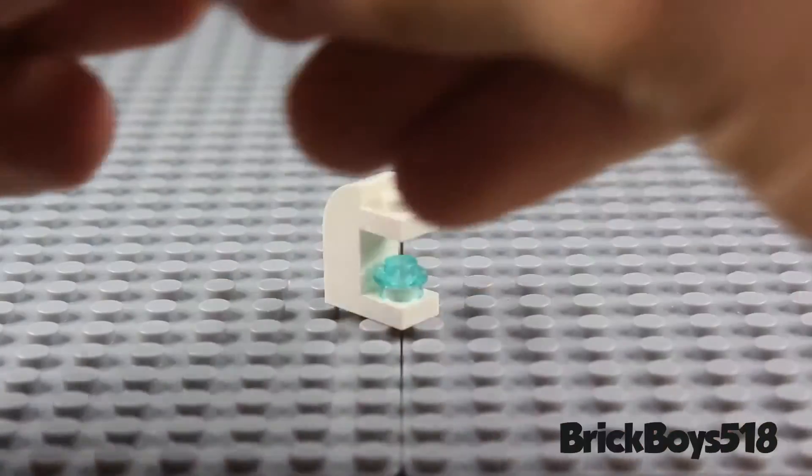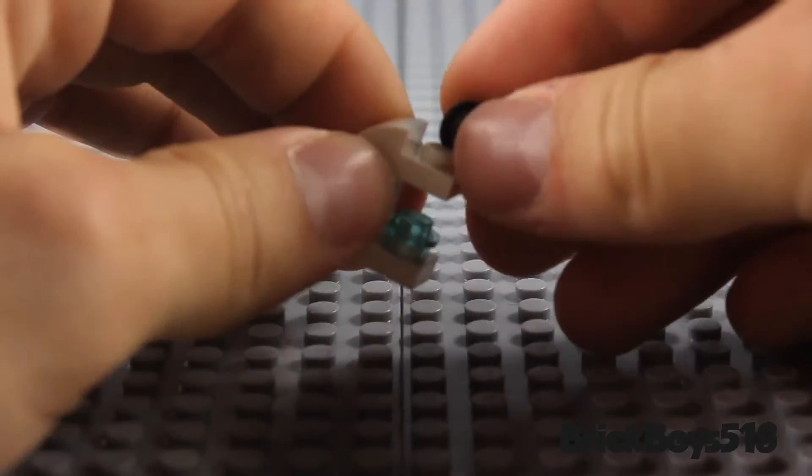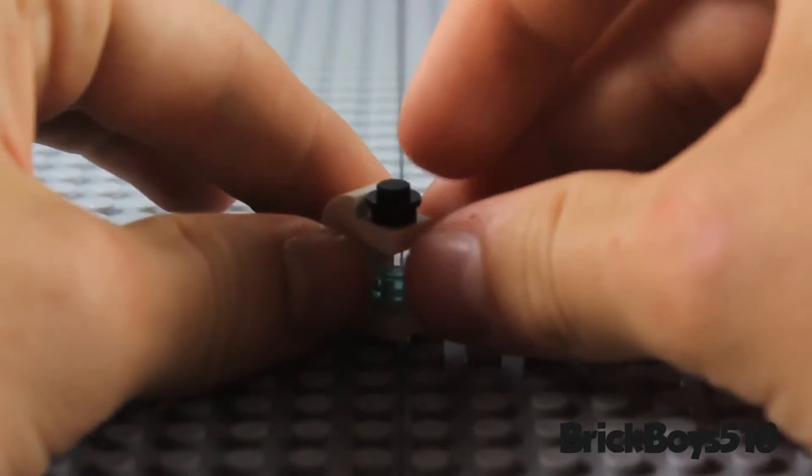So you're going to take another 1x1 stud. And I'm using black for this. You're just going to place it right on the top there.